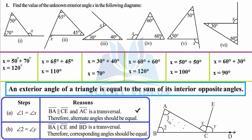This holds true for every triangle. So this was the whole concept behind the theorem. Now let's solve the questions. The first one: you are given interior opposite angles 50° and 70° and you have to find angle X. Simply add them — X equals 50 plus 70, which is 120°.